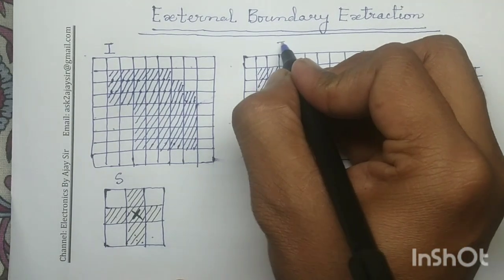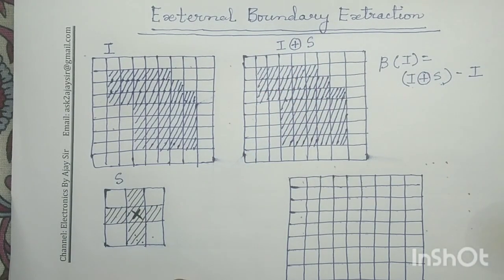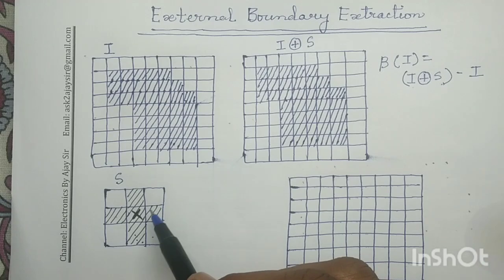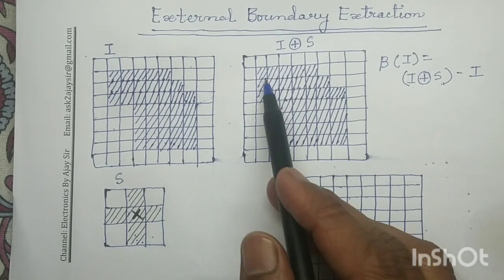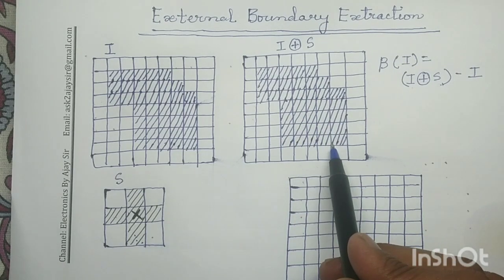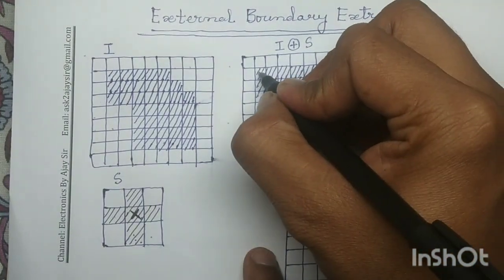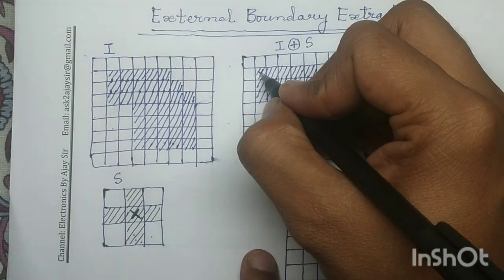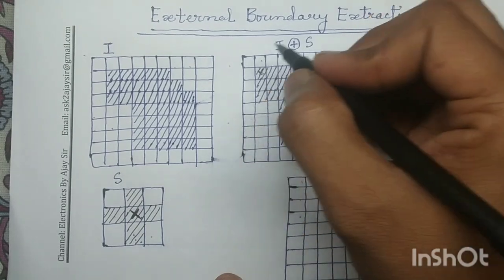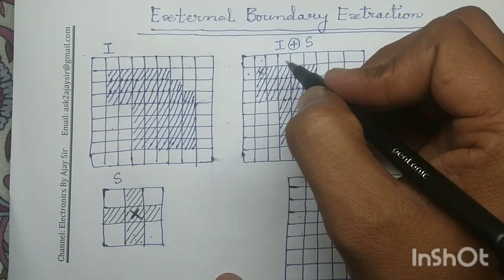To perform the dilation operation, we place the center of the structuring element on all the object pixels and perform the logical OR operation. For example, if you place the center of the structuring element at a given position, you observe the four neighborhood pixels. After performing the dilation operation at each position, new pixels become logic 1.